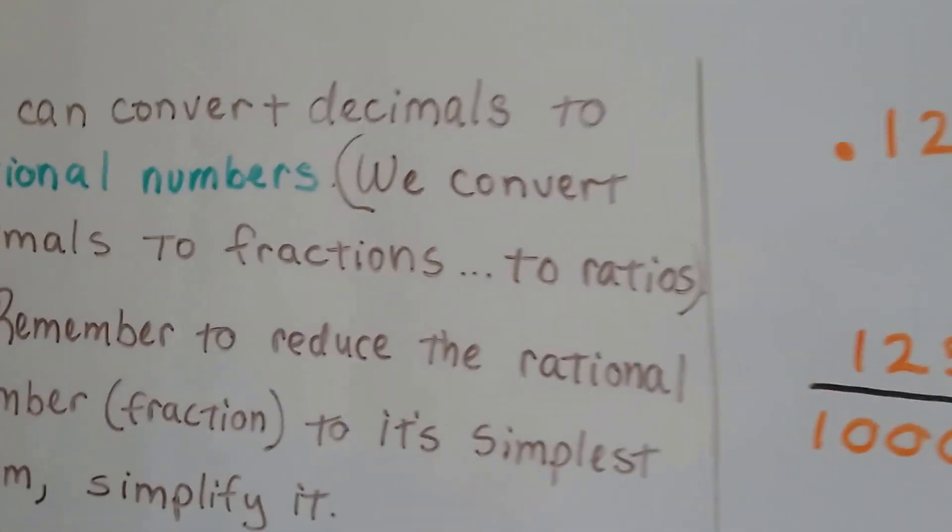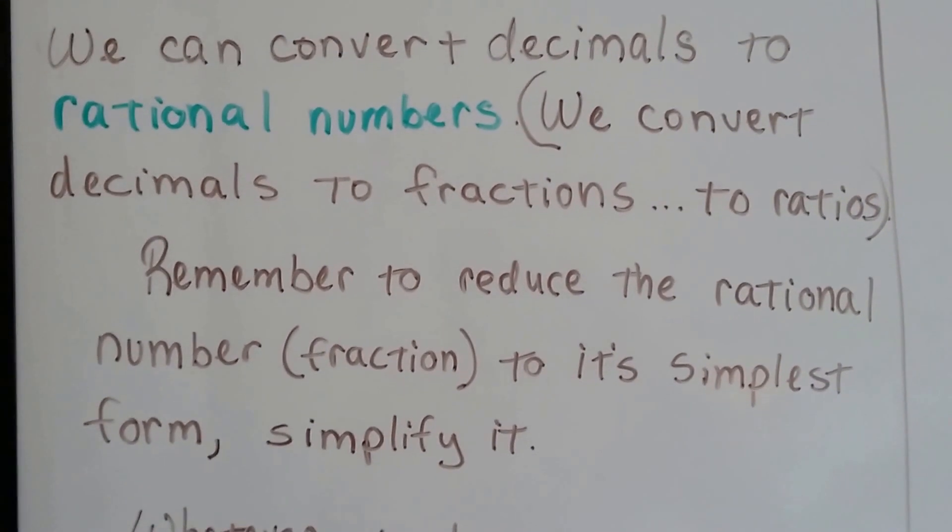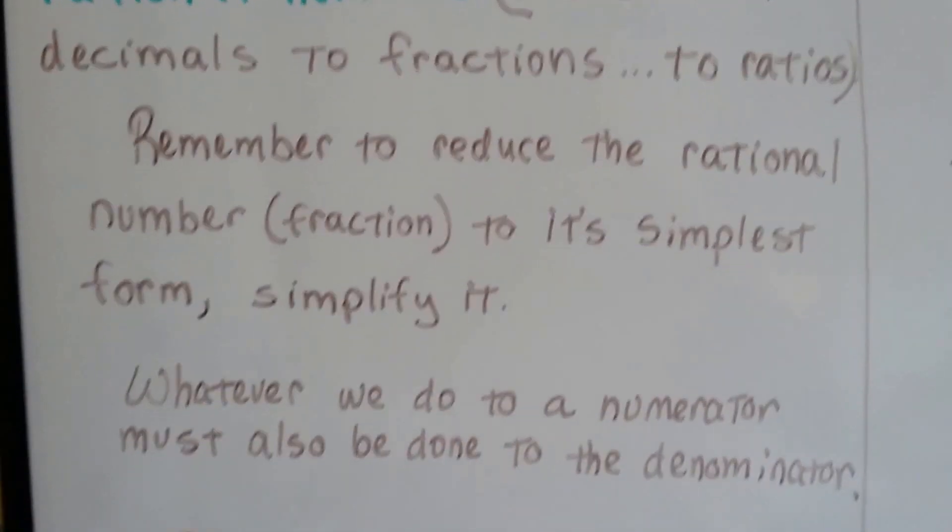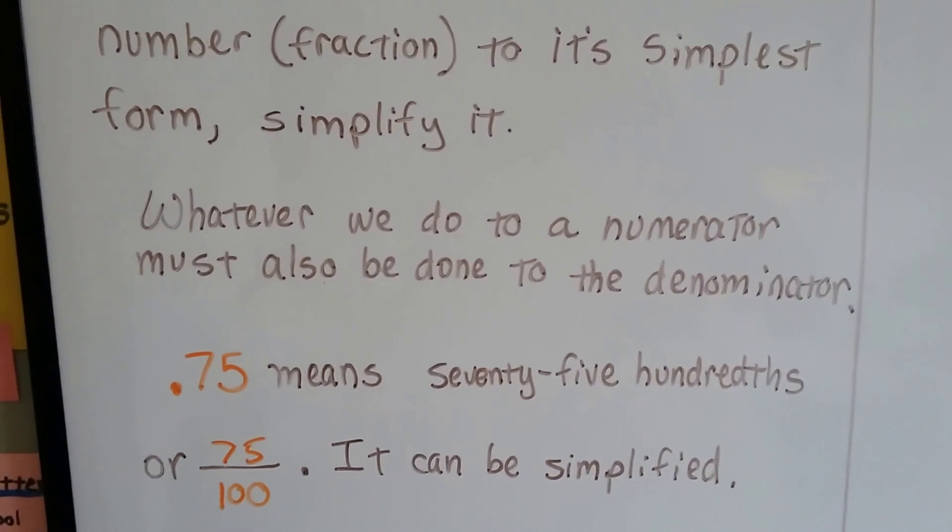We can convert decimals to rational numbers. We convert the decimals to fractions, to ratios. It's the same thing. Remember, to reduce the rational number, that fraction, to its simplest form, we simplify it. And whatever we do to a numerator must also be done to the denominator. Remember, they get jealous.